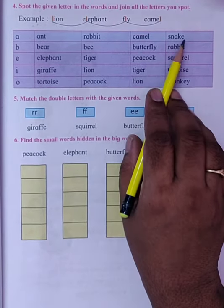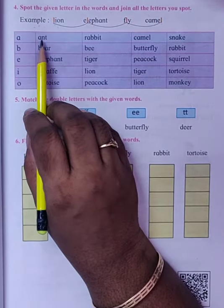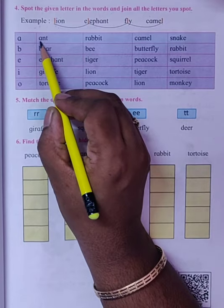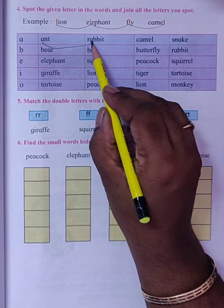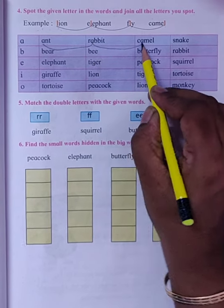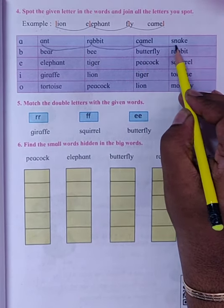Ant, Rabbit, Camel, Snake. The first letter of Ant is A. So we will join A with the alphabet A in Rabbit, the same alphabet A in Camel, and the same alphabet A in Snake.